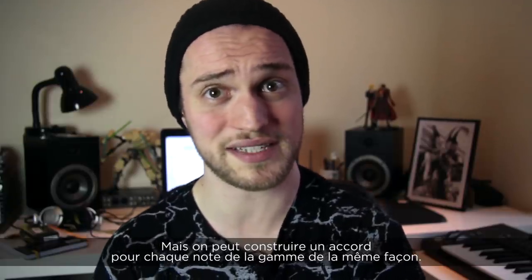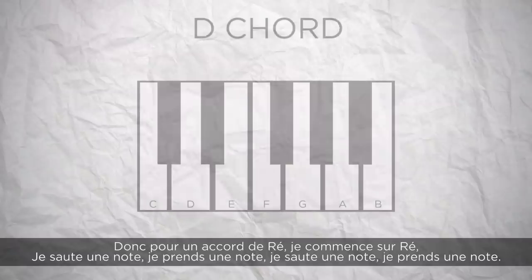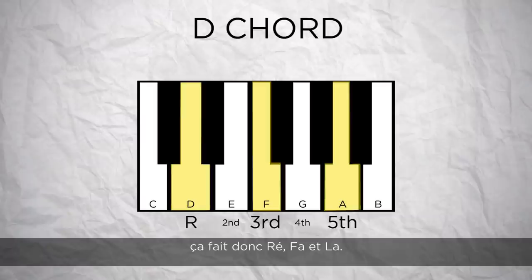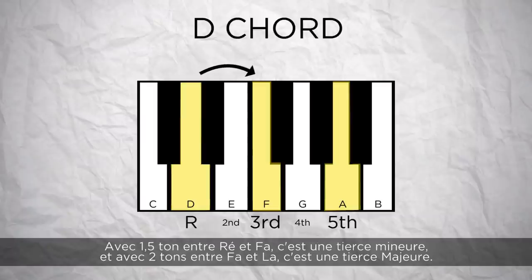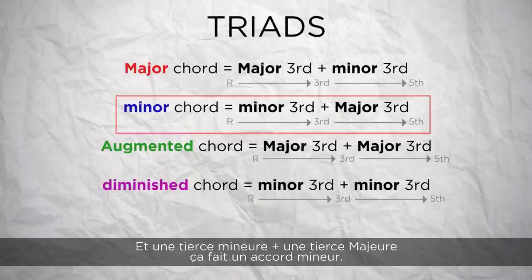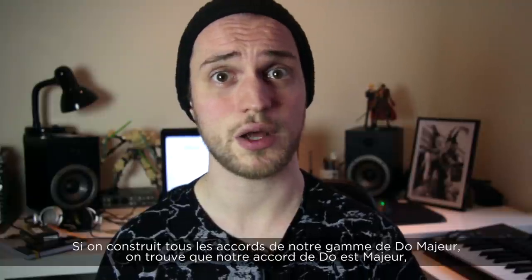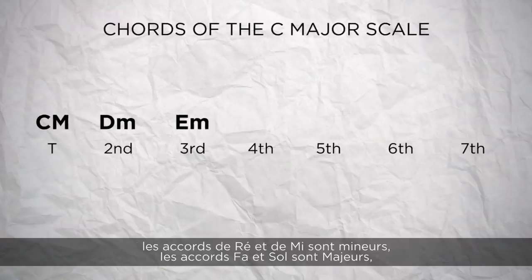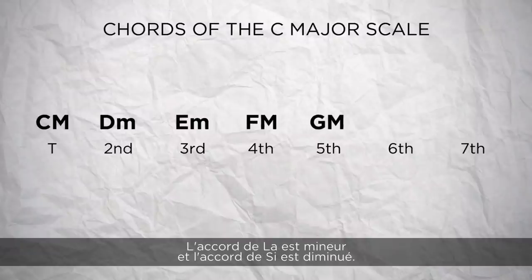We can build a chord for every note in the scale the same way. For a D chord: D, F, A — one tone and a half between D and F (a minor third), two tones between F and A (a major third) — so that's a minor chord. Building every chord of the C major scale, we find: C is major, D and E are minor, F and G are major, A is minor, and B is diminished.